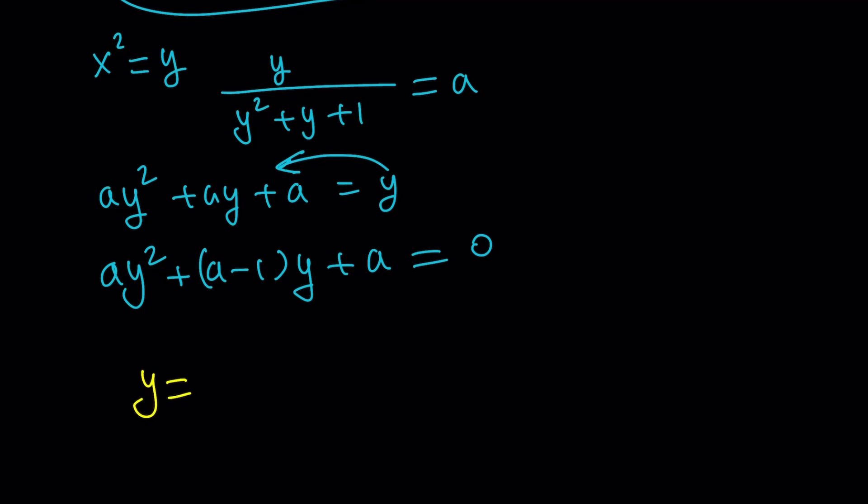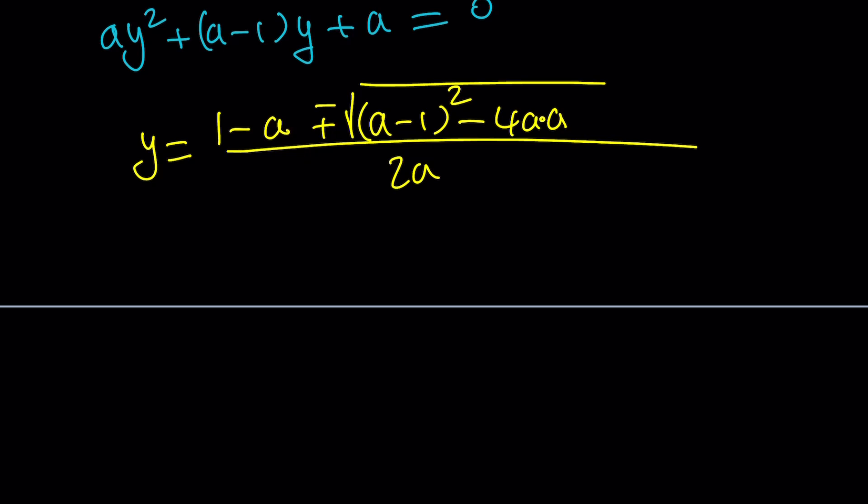So y from here is going to be negative b, which is the opposite of a minus one, plus minus the square root of b squared minus 4ac. aa is going to give me a squared, and that's divided by 2a. Let's go ahead and simplify this. So 1 minus a plus minus the square root of a squared minus 2a minus 4a squared. That's going to give me negative 3a squared minus 2a plus 1. And all of that is divided by 2a.